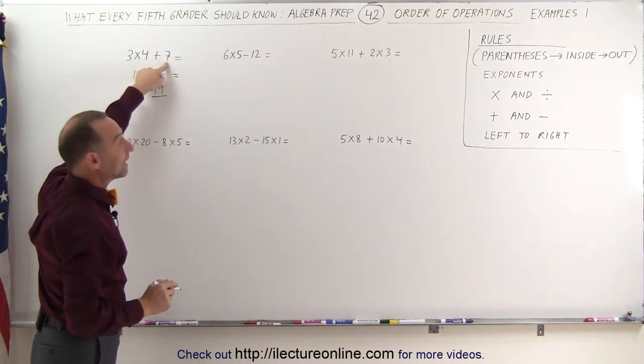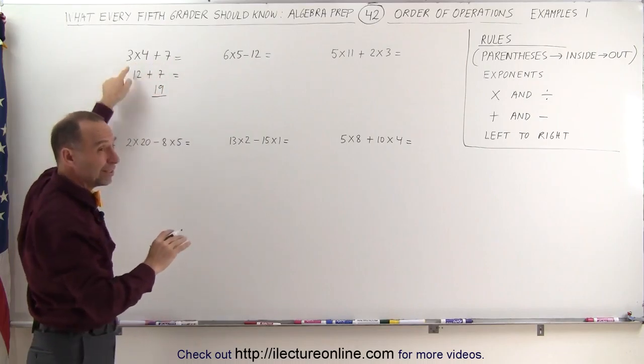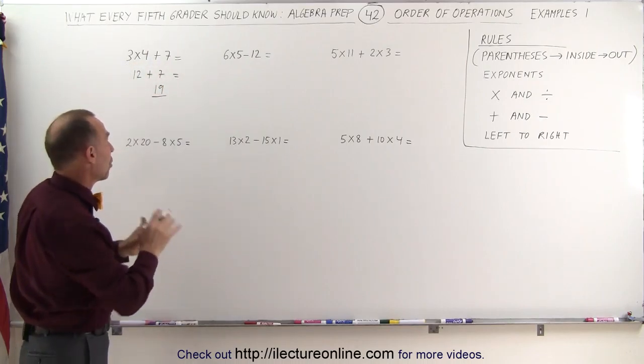If you were to add the 4 plus 7 together, that would be 11 times 3, you get 33, you get a completely wrong answer. You don't want to do it that way.